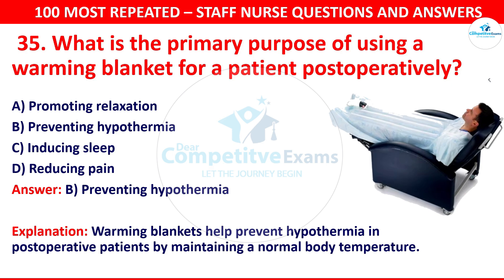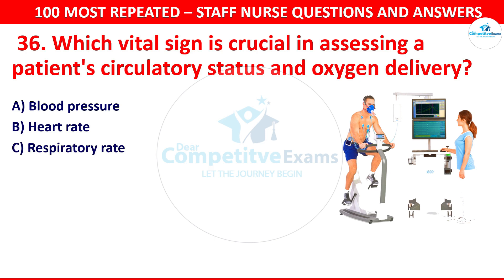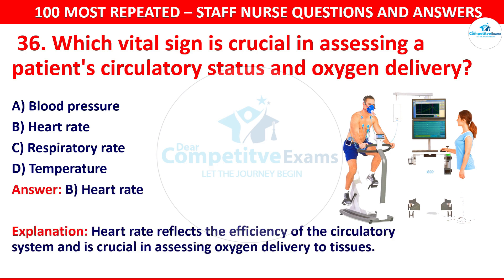Question number 36: Which vital sign is crucial in assessing a patient's circulatory status and oxygen delivery? Options are blood pressure, heart rate, respiratory rate, or temperature. The correct answer is heart rate. Heart rate reflects the efficiency of the circulatory system and is crucial in assessing oxygen delivery to tissue.